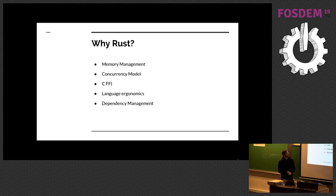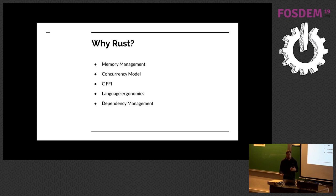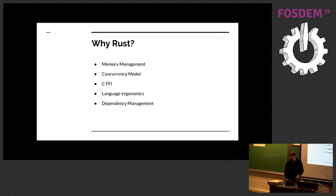So why Rust? I think a lot of people have heard about this. It tries to take care of a lot of the memory management and safety. It has a really nice concurrency model so you can write code that's concurrent and it won't let you write things that aren't safe. From the very beginning it ties into C pretty well. I find the language really easy to read. And the dependency side has a pre-built package manager that works well, which is something that C and C++ are very bad at.